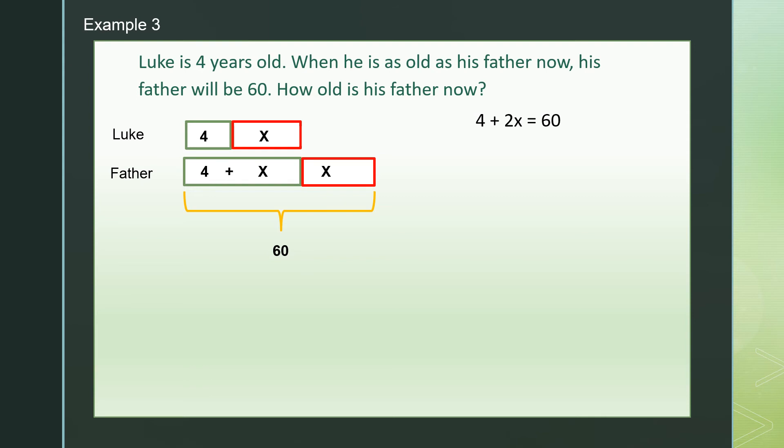We minus 4 from both sides. On the left minus 4, the 4 is gone, so that is left with 2X. On the right, 60 minus 4 is 56. We divide both sides by 2. 2X divided by 2 is X. 56 divided by 2 is 28. How old is his father now? Now father is 4 plus X years old, that is 4 plus 28. Father is 32 years old.